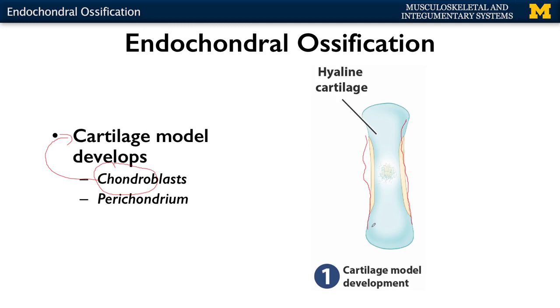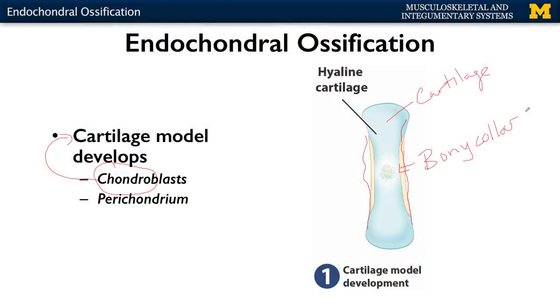Looking at this illustration, the blue represents cartilage — that hyaline cartilage. But also note this region right here, which is actually bone. We refer to this area as the bony collar. The bony collar starts fairly early on in endochondral ossification, and it gives you bone on the sides of your cartilage model, which keeps the integrity of the cartilage model — it can keep it upright and allow it to actually grow.